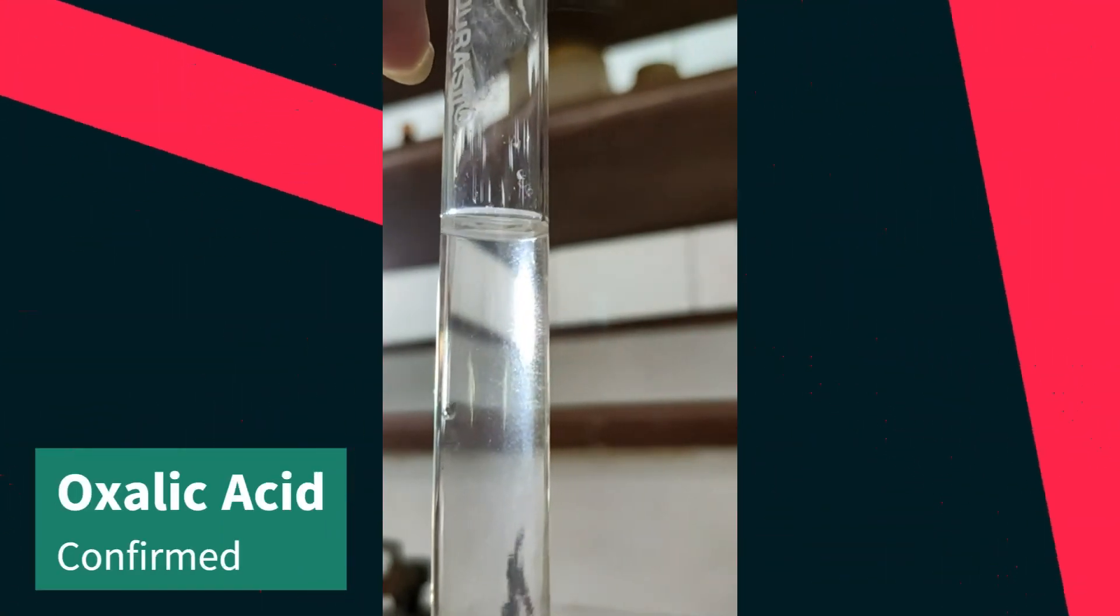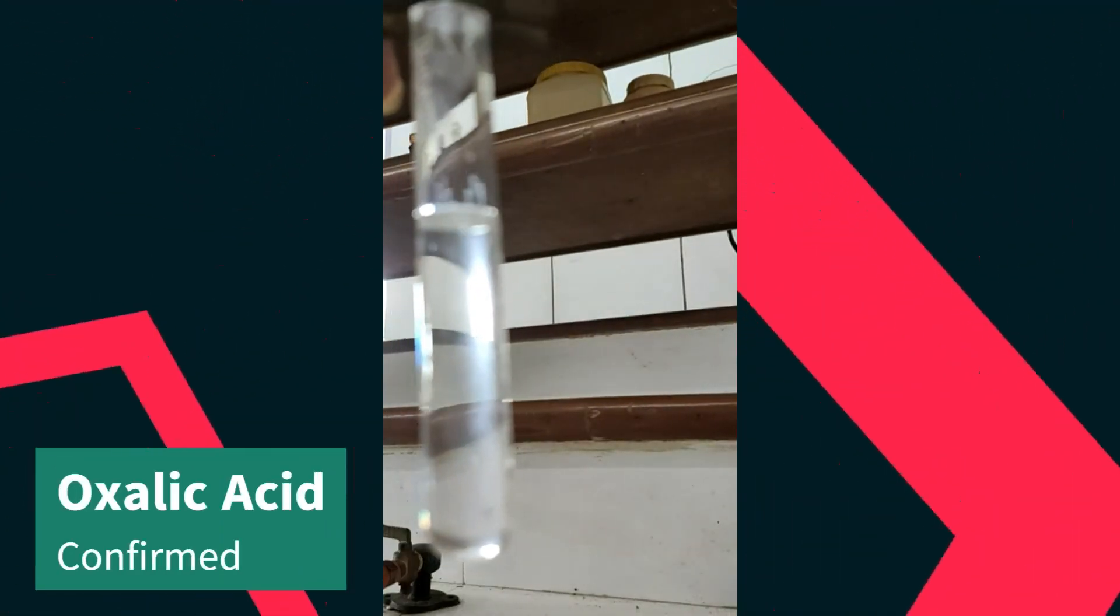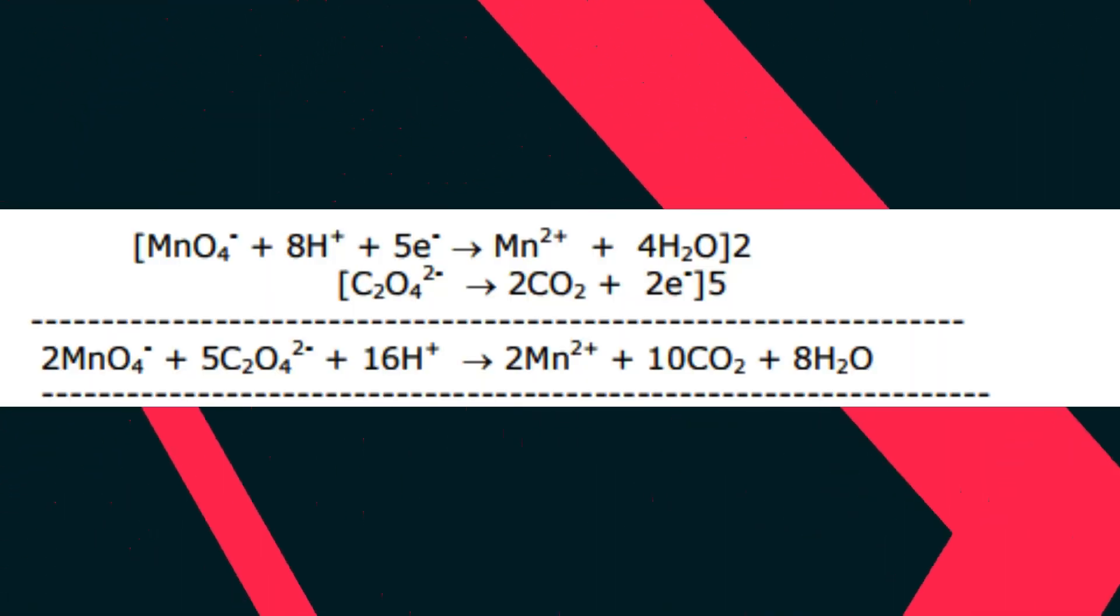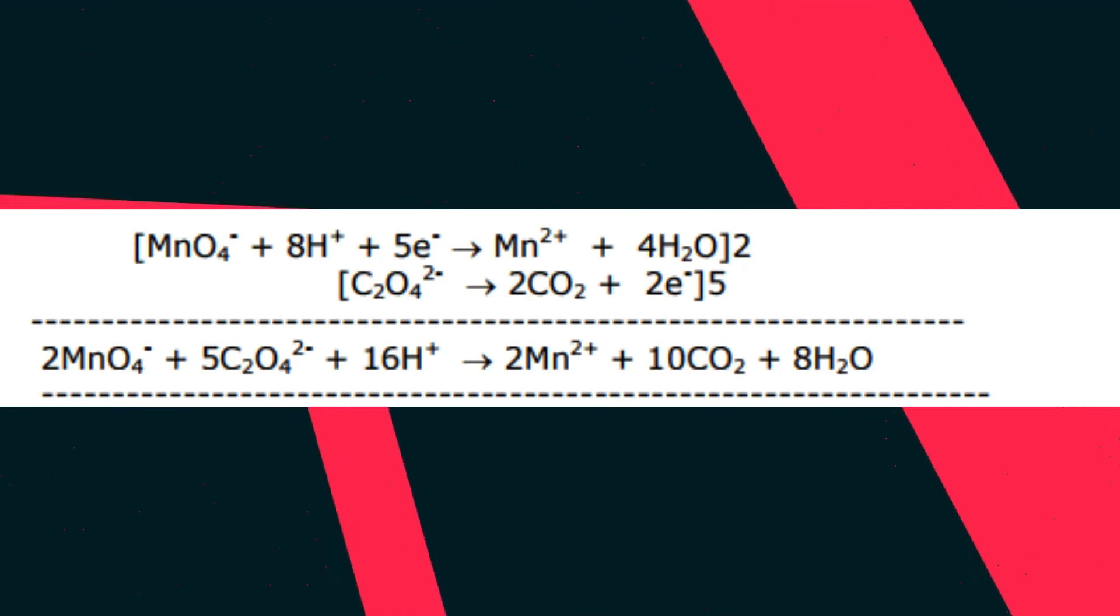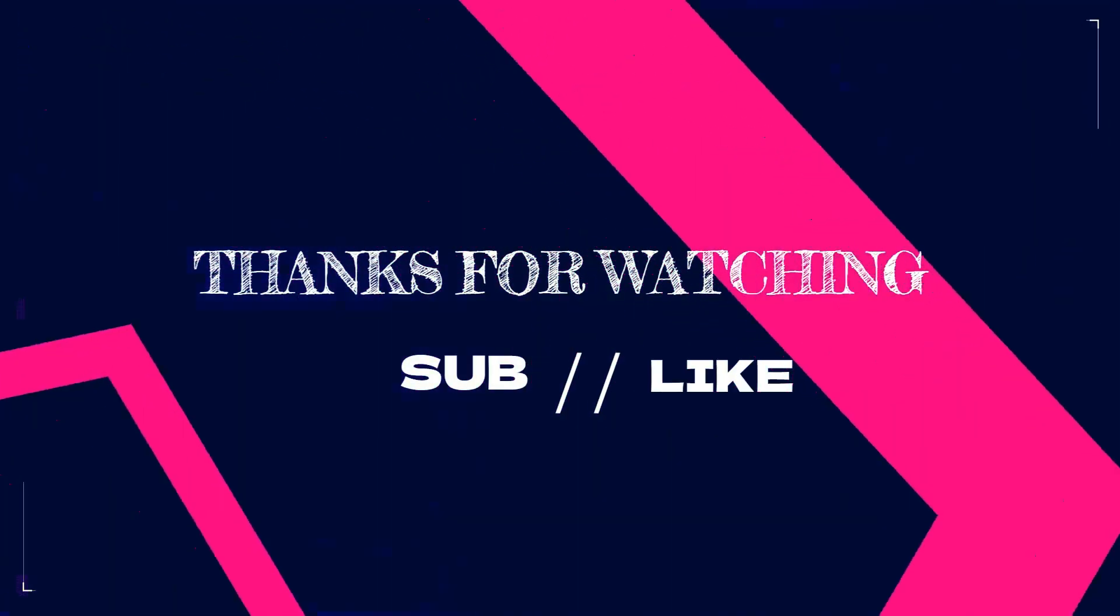Just add a dilute solution of KMnO4 to it. If the color decolorizes like this, it's oxalic acid. So I guess you are able to understand and you are liking this video. So please click on like and do subscribe the channel for such kind of videos. Thank you.